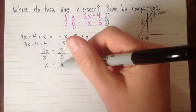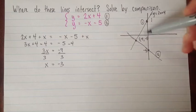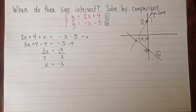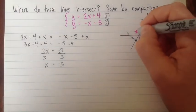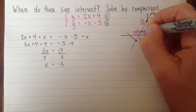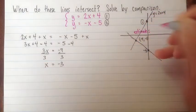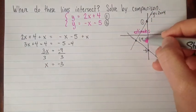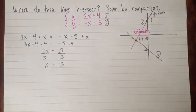And this is a good place to stop and compare to the sketch and see if it's reasonable. My estimate was that x was negative 4 and x is negative 3. So things are going really well so far.